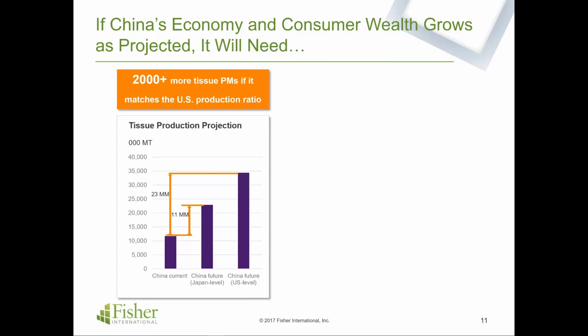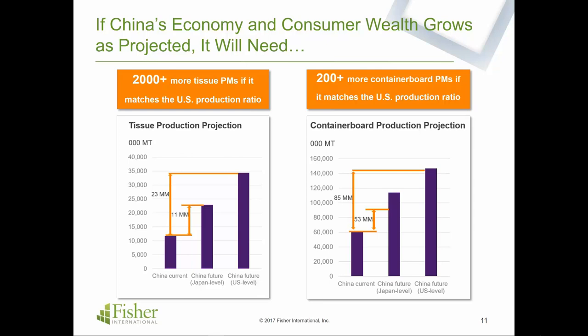We explored tissue projections more fully in a recent PPIC article on our website. In this bar chart, we showed projections of volume growth in tissue as China grows at various scenarios — one if their consumption gets to the Japan level, the other if it gets to the US level. The take-home message is: if you do the math and China gets to a more developed world consumption of tissue, they're going to need 2,000-plus tissue machines. If we do that same arithmetic on the containerboard side, you get pretty staggering numbers — 200-plus containerboard machines.